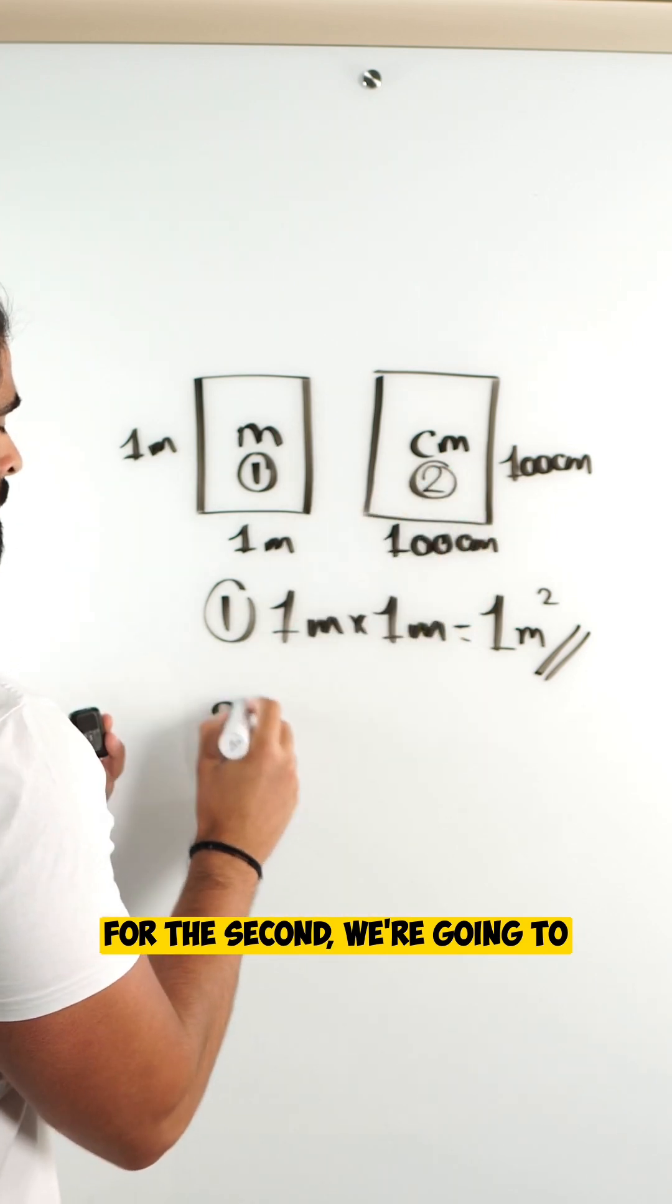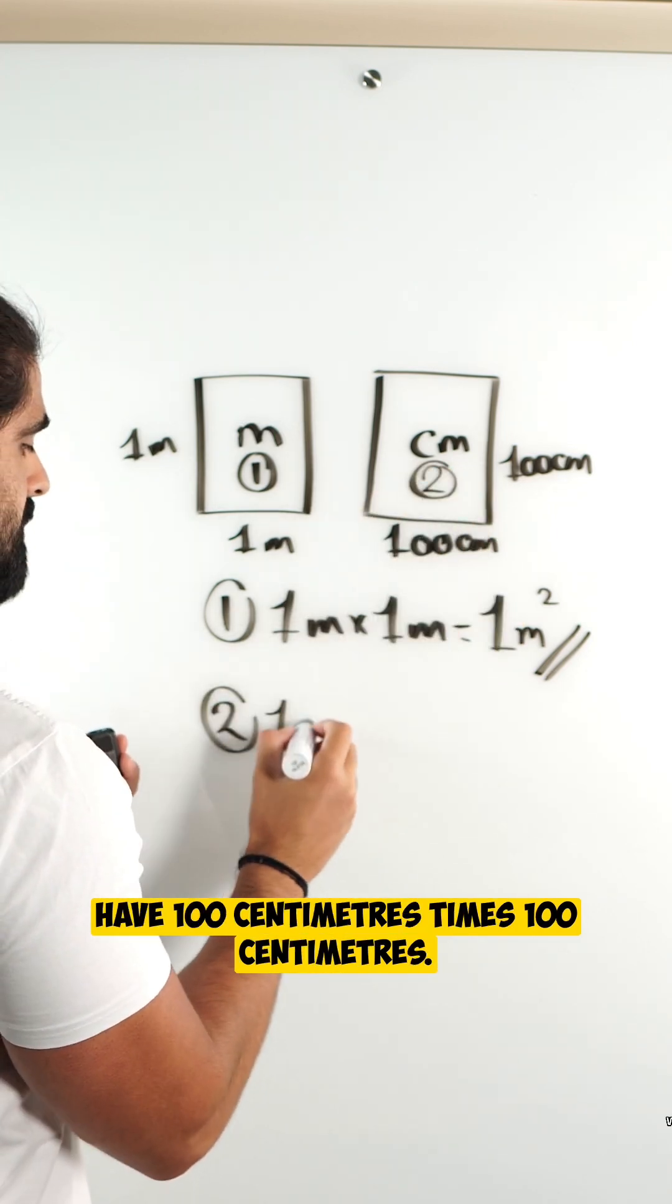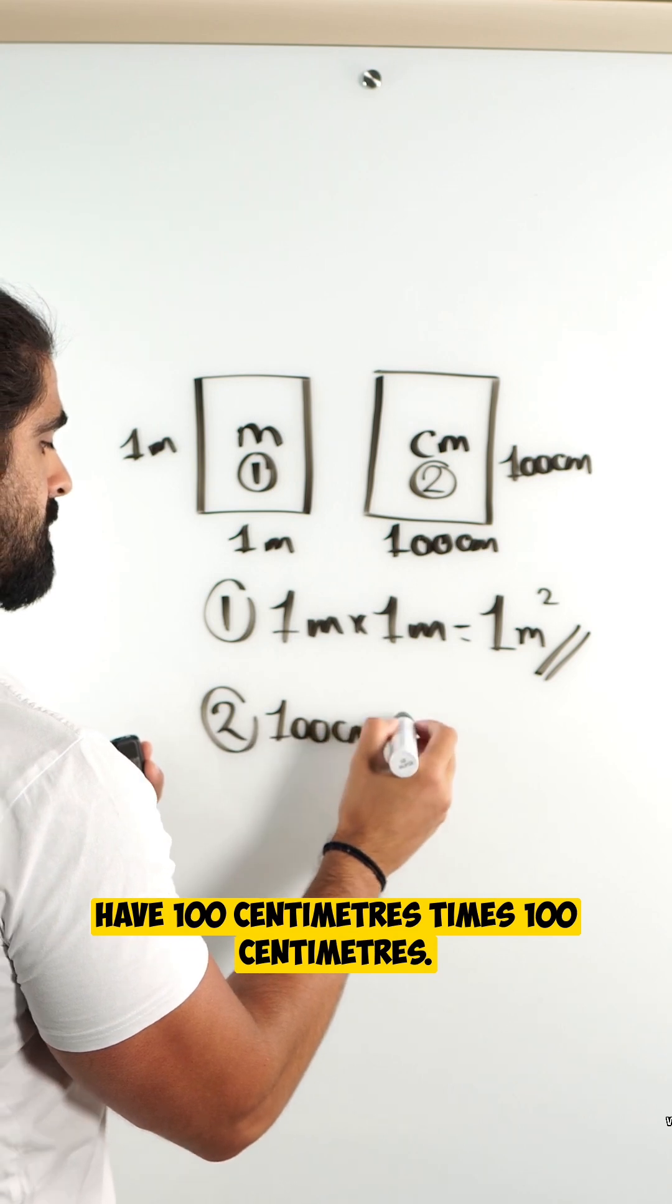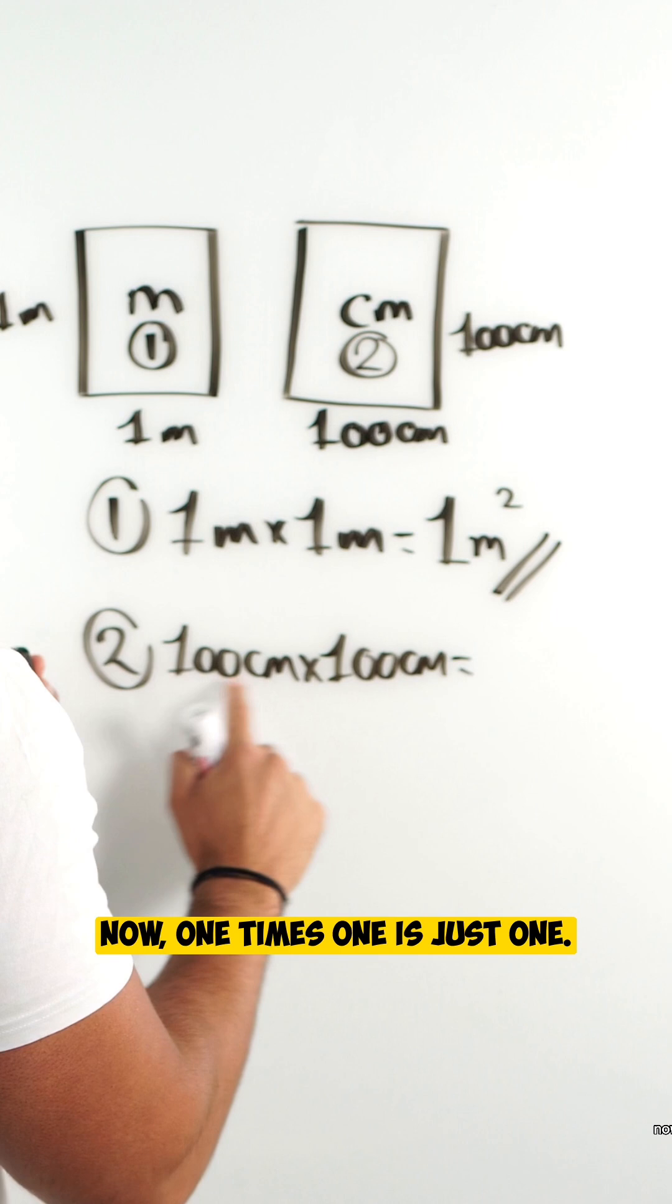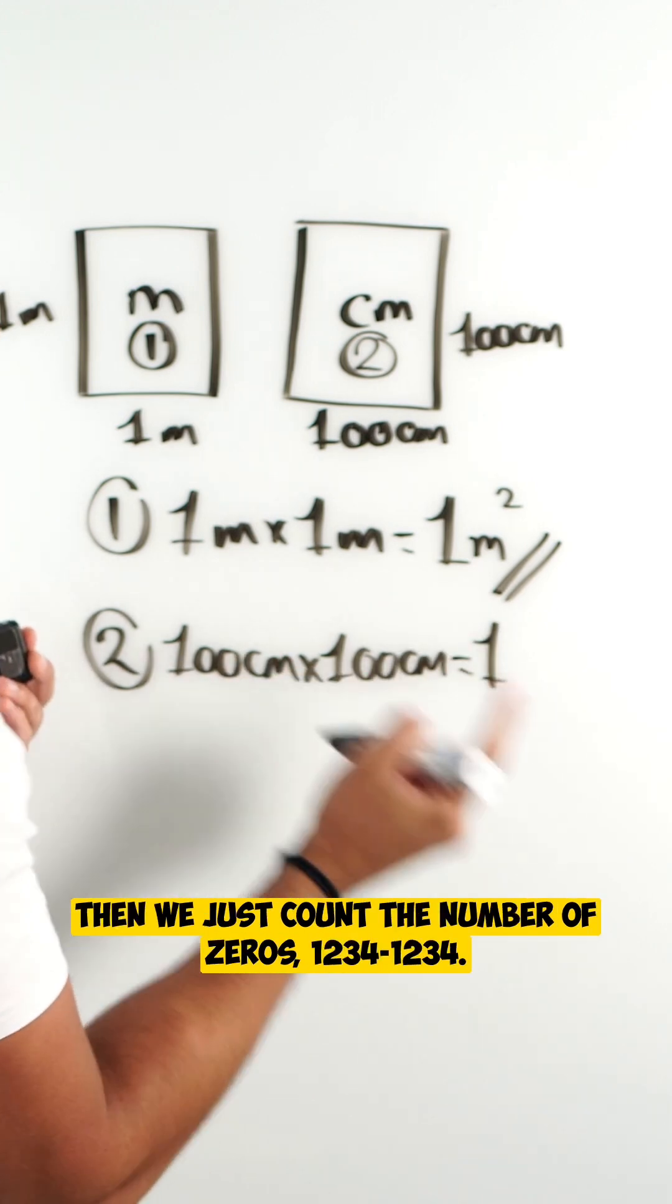For the second, we're going to have 100 centimeters times 100 centimeters. Now one times one is just one. Then we just count the number of zeros.